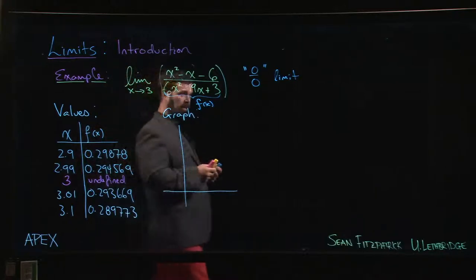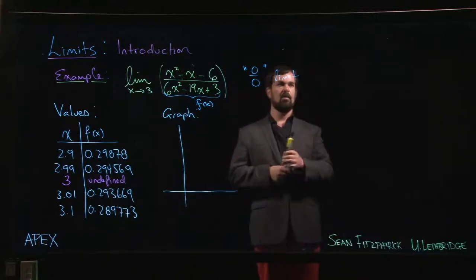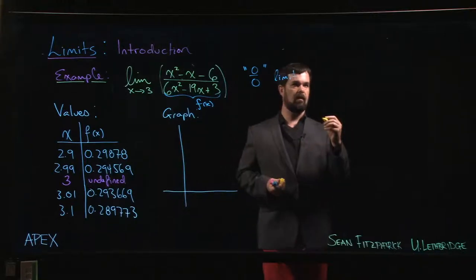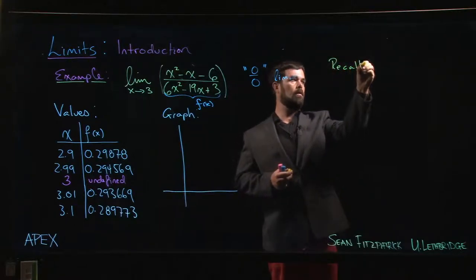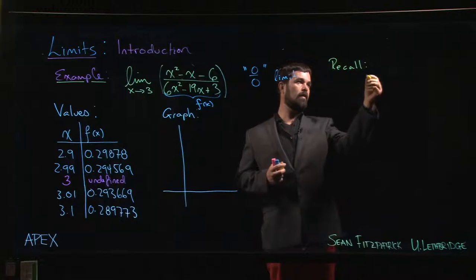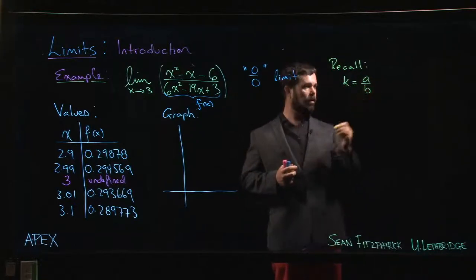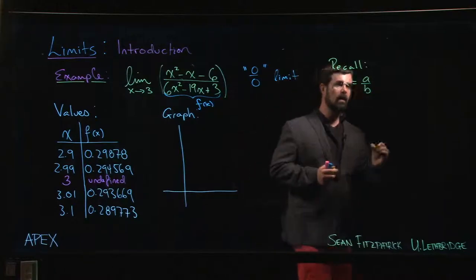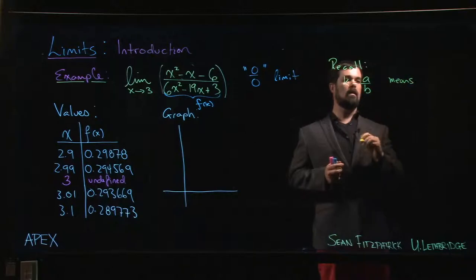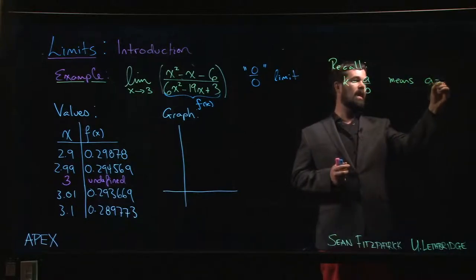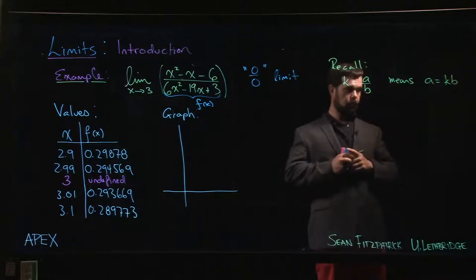There are a number of these that are called indeterminate forms, and the reason that they're called indeterminate is if you just think in terms of fractions for a second. Recall that if you took a fraction of the form a over b, you wrote k equals a over b.